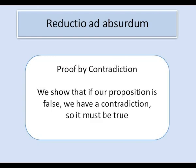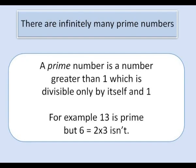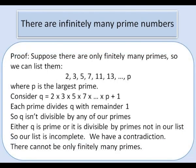So a classic example is Euclid's famous proof that there are infinitely many prime numbers. You may remember that a prime number is an integer greater than 1, which is divisible only by itself and 1. We're going to show that if the proposition is not true, that is, if there are only finitely many primes, then we have a contradiction.